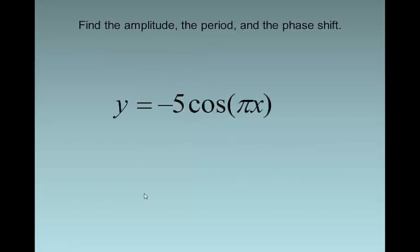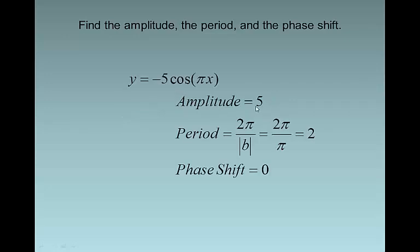By the way, period, phase shift, and amplitude don't change regardless of whether it's sine or cosine — you calculate them the same way. Here my A is negative 5, my B is π, and I have no C, so there's no phase shift on this one. Your amplitude is still 5, the absolute value of A. Period is 2π over B, so that's 2π over π, which is 2. We have no phase shift. This is a cosine — it'll start at the max and head down normally, but because there's a negative here, we'll actually start at the bottom and head up. We're just looking for amplitude, period, and phase shift, so we're not sketching these right now.